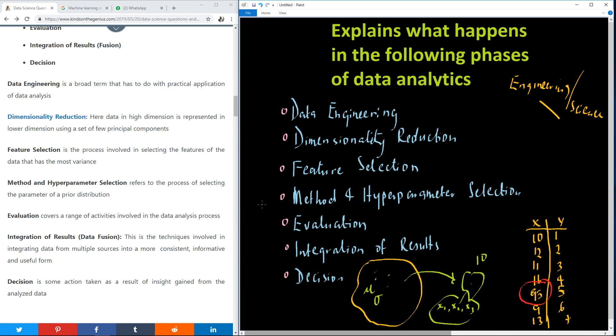So integration of results is called data fusion. Now this term is important. You might be asked, what is data fusion? Integration of results gives the explanation of this data fusion. This is a technique involved in integrating data from multiple sources into a more consistent, informative and useful form. Sometimes you may also hear of something like consolidation.